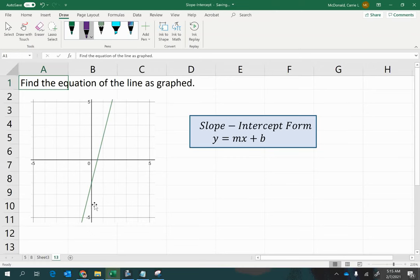Find the equation of the line as graphed. I have already up here the slope-intercept form, which is usually the easiest way to figure out the equation of a line when you're starting from looking just at the graph.